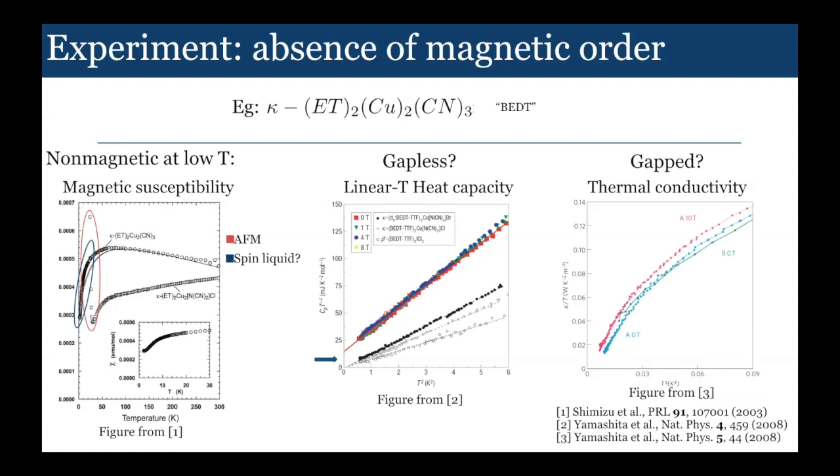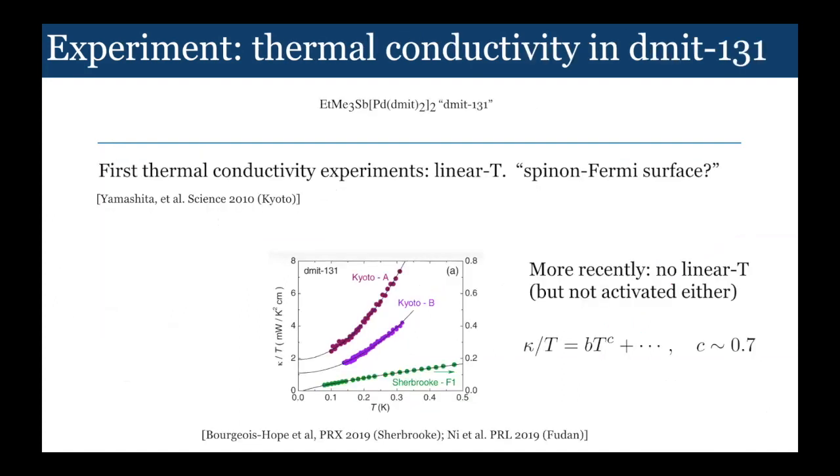But you might worry that these gapless excitations are actually coming from defects. If you want to look at intrinsic gapless excitations and try to disentangle that from defects, it's useful to do thermal transport. The data on the right is showing the thermal conductivity. If you look at the thermal conductivity in the BEDT compound, it goes to zero at low temperature. So that would actually be an indication for intrinsically there being a spin gap.